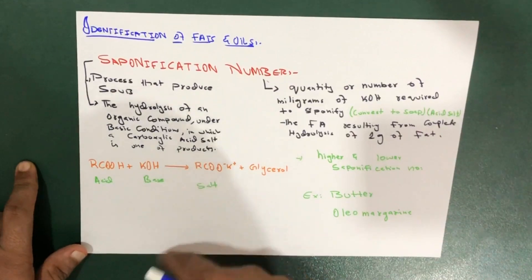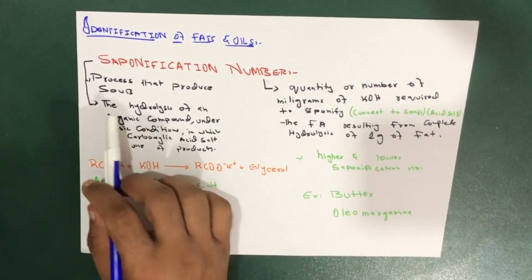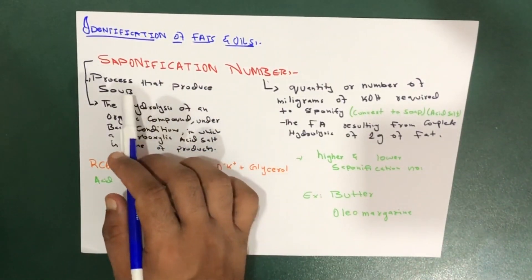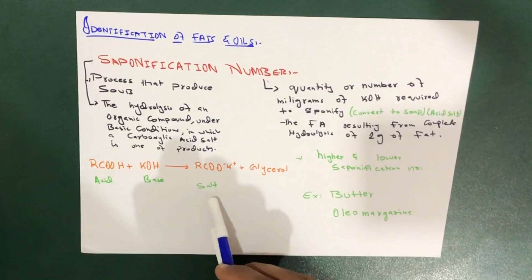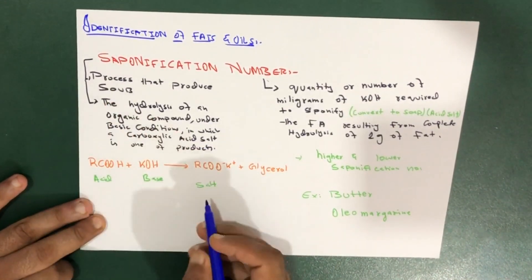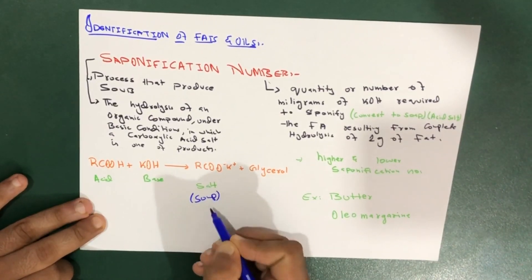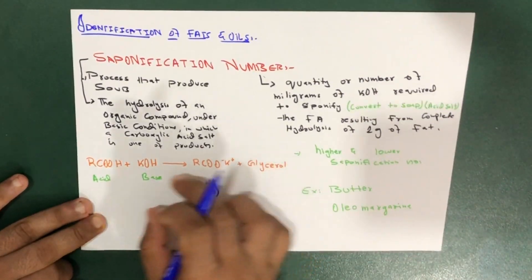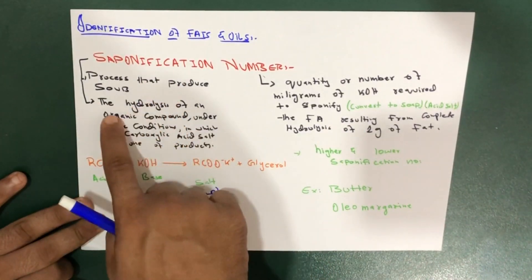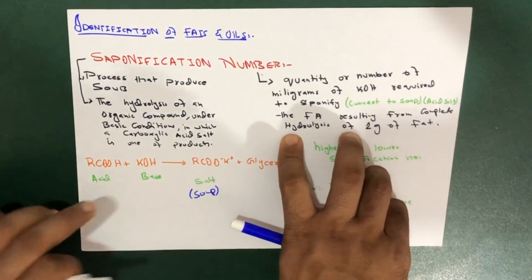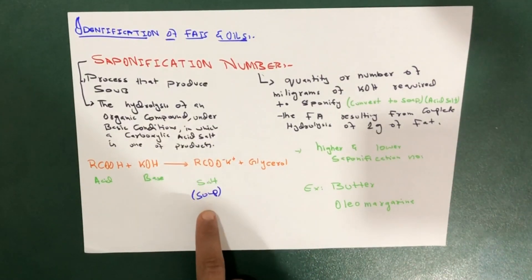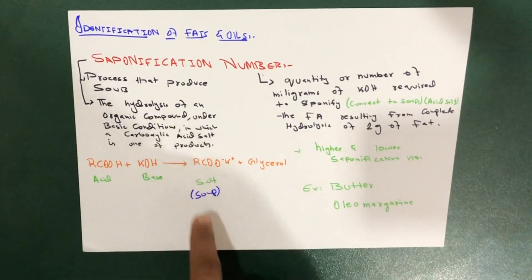In this case, we have an acid and a base. When they react together they produce a salt and glycerol, which we're going to discuss in just a bit. So the saponification is the hydrolysis of an organic compound under basic conditions in which a carboxylic acid salt is one of the products.